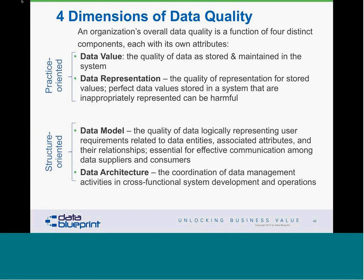We've talked about these four dimensions of data quality: data value quality and data representation quality — practice-oriented — and model quality and architecture quality — structure-oriented. The data value is the quality of the data stored and maintained in the system. The data representation is different — it's how it is shown. So in the zero-dollar SunTrust example, I was trying to get them to say 'Oh, you really have a hundred dollars or a thousand on the card and it just doesn't show up.' Of course, that wasn't the case. Most organizations focus on what's close to the user — the data representation quality, because it shows up on your smart tablets, phones, and web browsers.